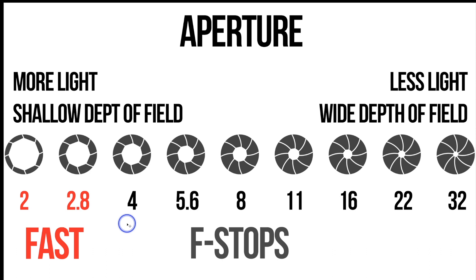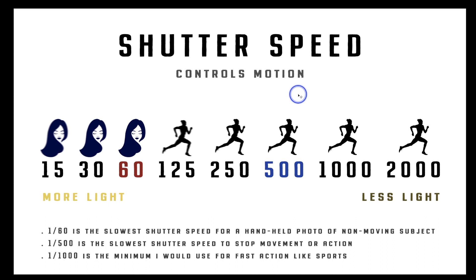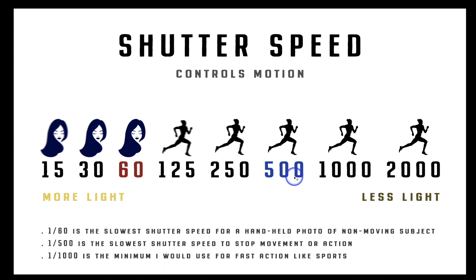The last thing is shutter speed, and shutter speed controls motion. There are two different highlighted icons representing motion. In whole stops, some shutter speed examples are: 1/15th, 1/30th, 1/60th of a second — but usually we just see the number, so we say 125, 250, 500, 1000, 2000. Most cameras go up to about 8,000 and they'll go down to about 30 seconds if you need an exposure that long.